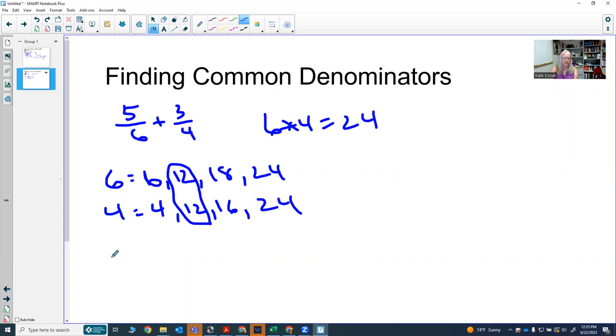This is one way to find a common denominator. Another way to find a common denominator is to write both denominators in prime factored form. So 6 is 2 times 3, and 4 is 2 times 2.